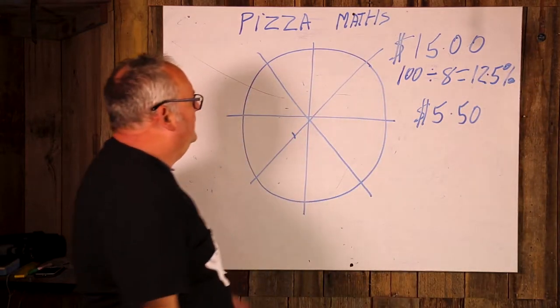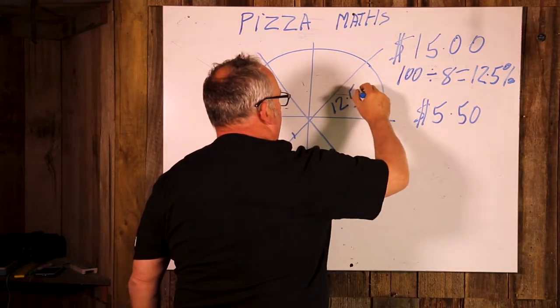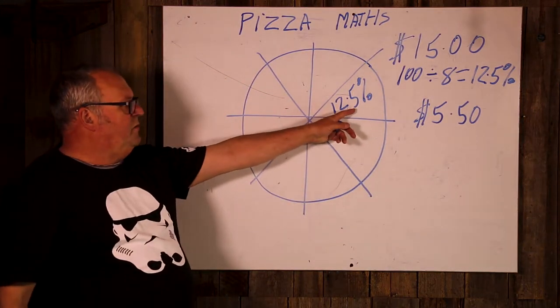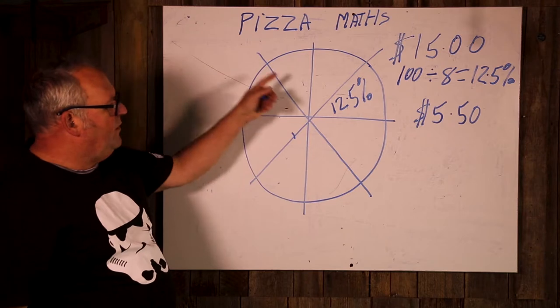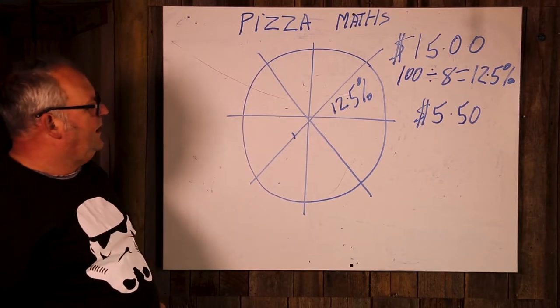So each slice here is worth 12.5% of the total and if I multiply 12.5 by 8, it equals 100. So I'm pretty comfortable that's right.